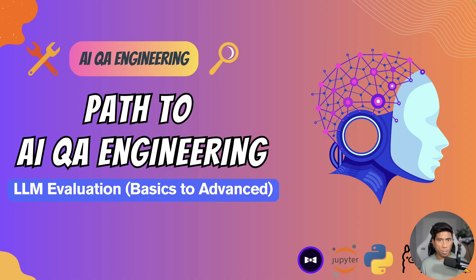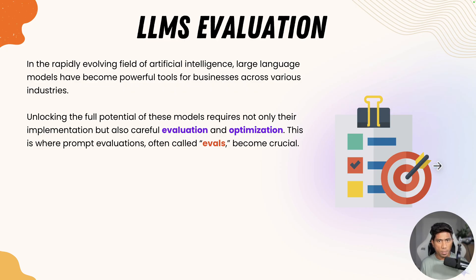It can be an application built using LangChain for a RAG application, or it can be a chatbot, or anything that is related to large language models — evaluation is super important. Artificial intelligence is really rapidly evolving, and it is super important that we evaluate these large language models. In order to unlock the full potential of these models, evaluations and optimizations are a crucial part. This is where prompt evaluation comes in, often called as evals, and it is very, very crucial.